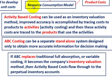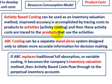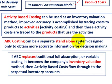To review: activity-based costing can be used as an inventory valuation method, and its improved accuracy is accomplished through a two-step process — first determining the cost of activities, then tracing those activity costs to the products that use them. ABC costing can also be a separate standalone system designed only to obtain more accurate information for management's decision making.